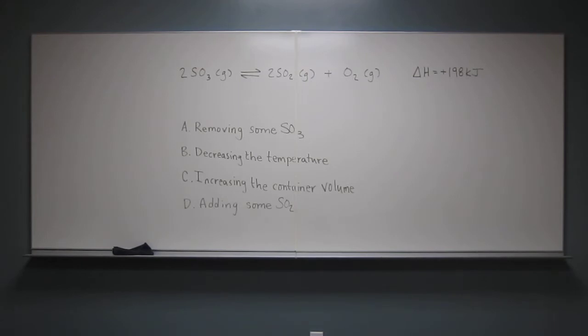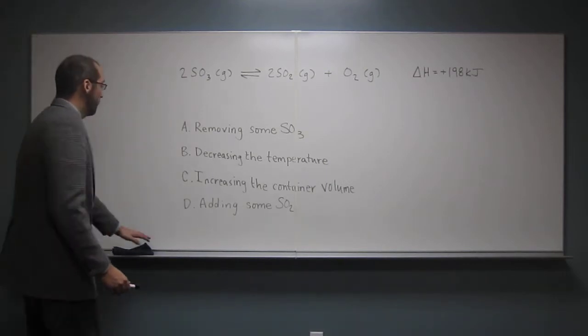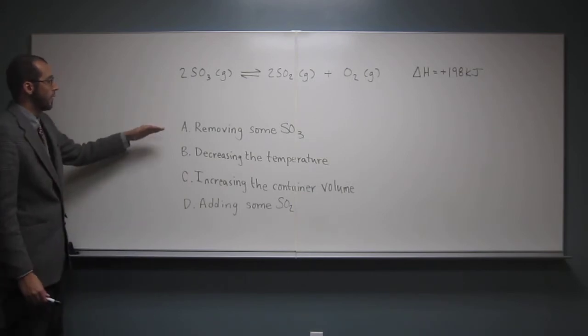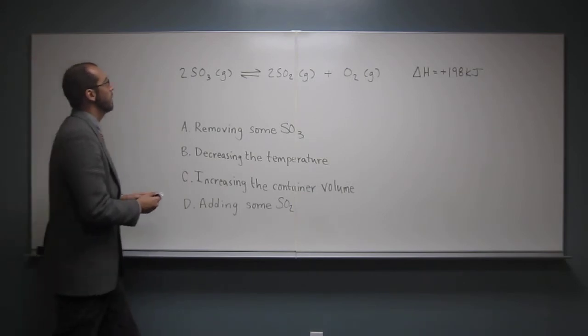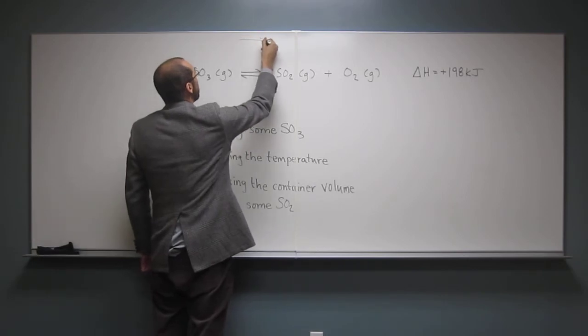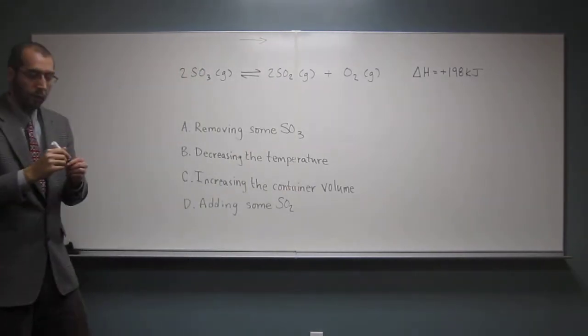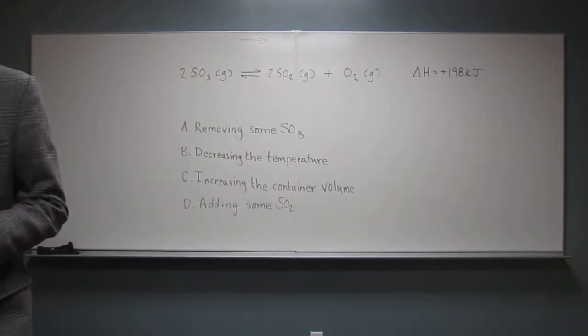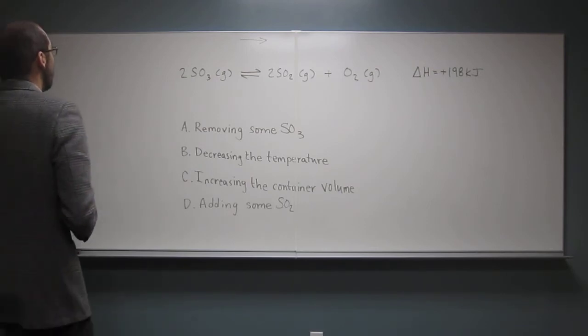Which change would cause the equilibrium to shift to the right? So it gives us four choices here, and we want it to shift to the right. Hopefully three of them shift it to the left, then the other one shifts it to the right, then it's not ambiguous.